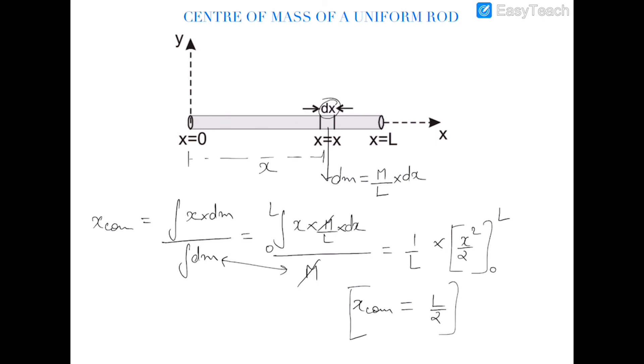So this is the method to find out the center of mass of continuous mass systems. And in next videos I would be coming up with different objects like semicircular ring, semicircular disc, and we will calculate their center of mass. Thank you.